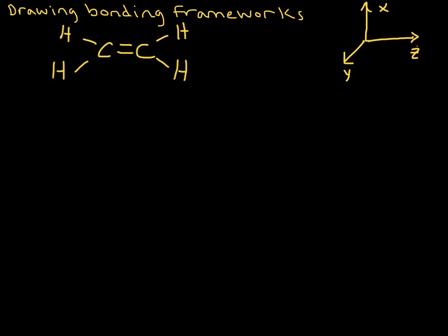So let's think about the sigma bonding framework first, and this is the framework that is going to involve hybridization of atomic orbitals to form hybrid orbitals. So the first thing we want to do here is look at these two carbons and determine the hybridization on those carbons.